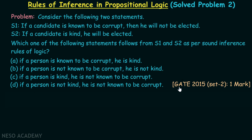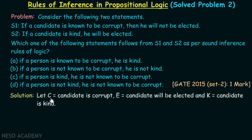This question has been asked in GATE 2015 Set 2 for one mark. Let's dive into the solution. Let C denote the candidate is corrupt, E denote the candidate will be elected, and K denote the candidate is kind.